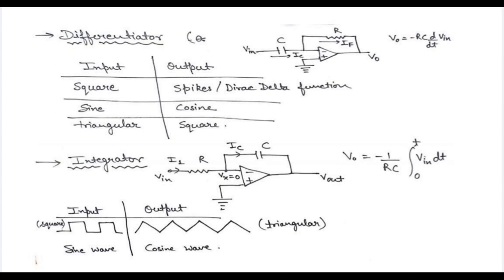Now let's talk about different types of inputs and the corresponding outputs. In the differentiator case, if you provide a square wave as the input, the output will be spikes — same as the Dirac delta function. If the input to the differentiator is a sine wave, the output will be a cosine wave. If the input is a triangular wave, the output will be a square wave.